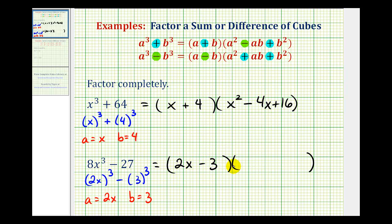The first term of the trinomial factor will be a squared. Since a is equal to two x, two x squared is four x squared. Plus a times b: two x times three is six x. Plus b squared: since b is equal to three, b squared is three squared, or nine.